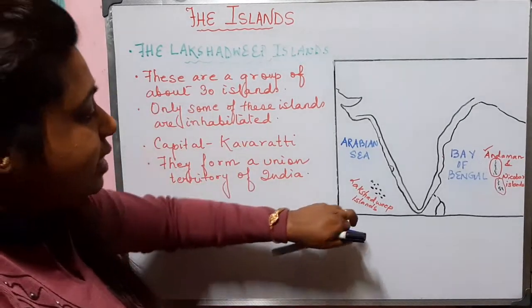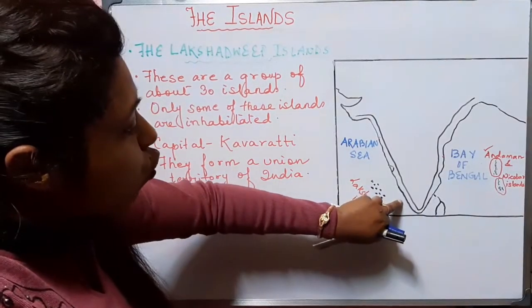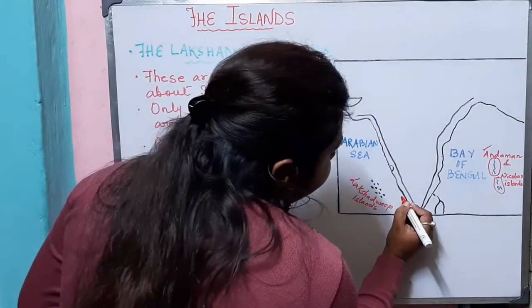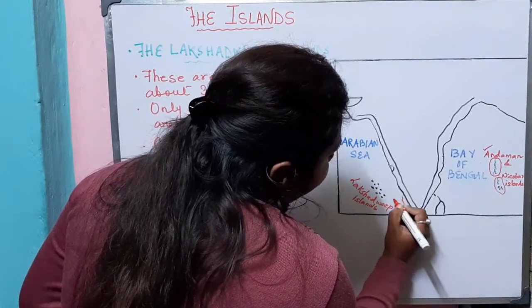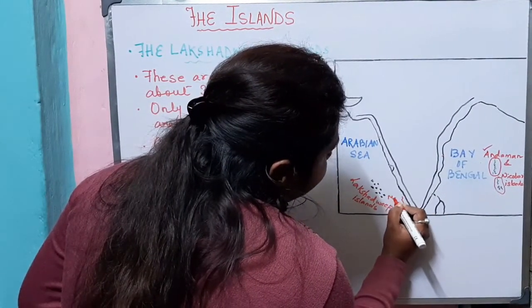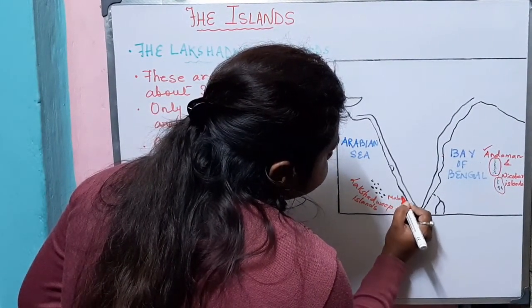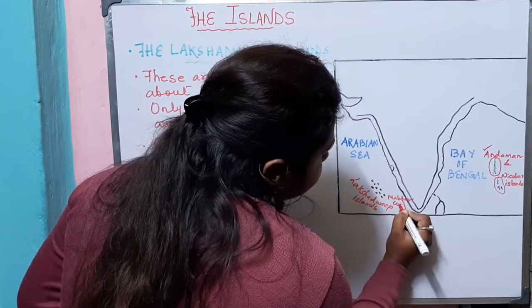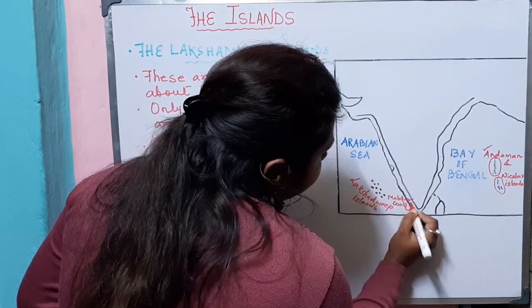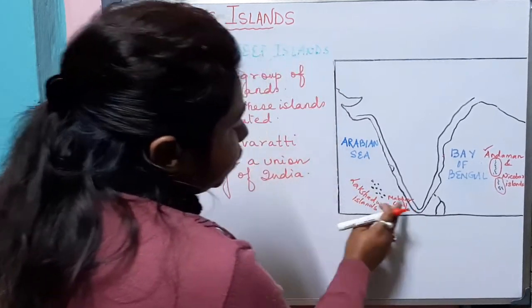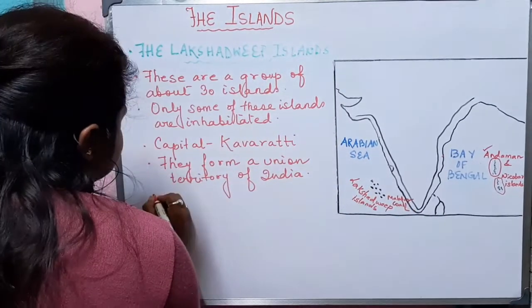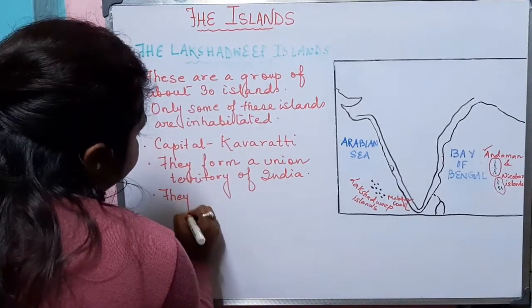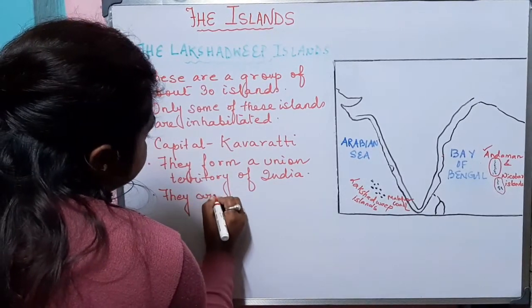The Lakshadweep Islands are close to the Malabar coast. Here we have the Malabar coast, and the Lakshadweep Islands are located close to it.